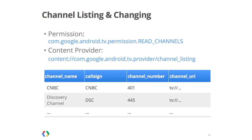Google TV includes a content provider for retrieving the list of TV channels available to the user, and supports an intent for changing channels. If you want to use this content provider, you must include the Read Channels permission in your app's manifest. This content provider has the names, numbers, and call signs for the channels, as well as the URI for the channel changing intent.